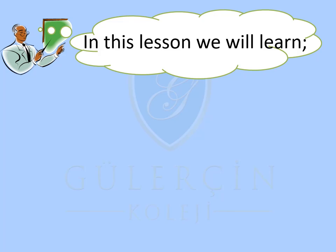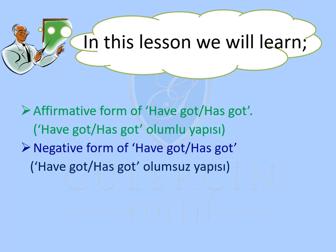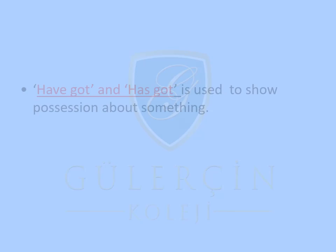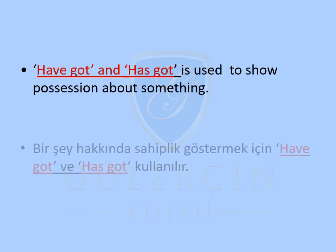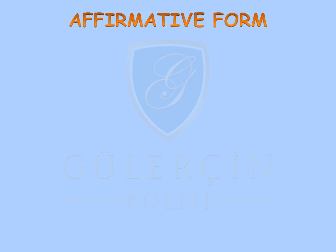In this lesson we will learn the affirmative form of Have Got and Has Got, the negative form of Have Got and Has Got, and the interrogative form of Have Got and Has Got. Have Got and Has Got are used to show possession about something.